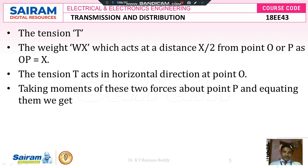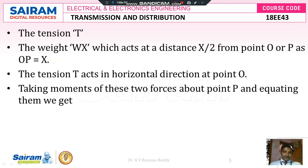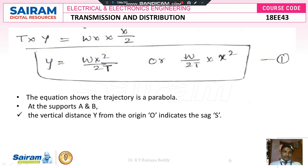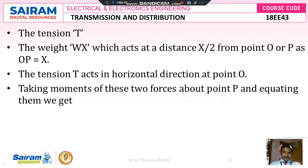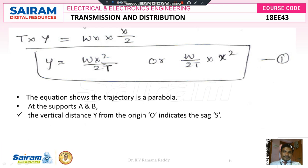Taking moments of these two forces about point P and equating them: tension T is in the horizontal direction and tension y is in the vertical direction. Therefore, multiplying the two tensions: T × y equals its weight wx, and x/2 is the length from either O to the center or P to the center. Therefore, wx × (x/2) gives T × y = wx²/2.